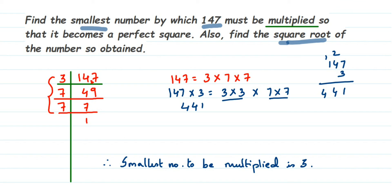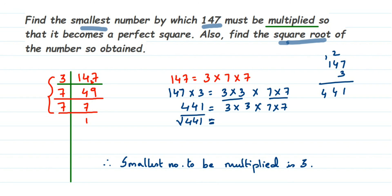The square root of 441 equals 21. We can verify: 441 = 3 × 3 × 7 × 7. Now the factors are all in pairs — 441 is a perfect square. To find the square root, from each pair we take one factor: from the pair of 3s we take 3, from the pair of 7s we take 7. Then we multiply: 3 × 7 = 21. So √441 = 21.